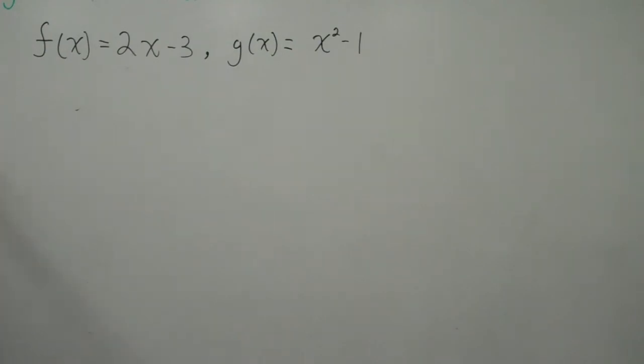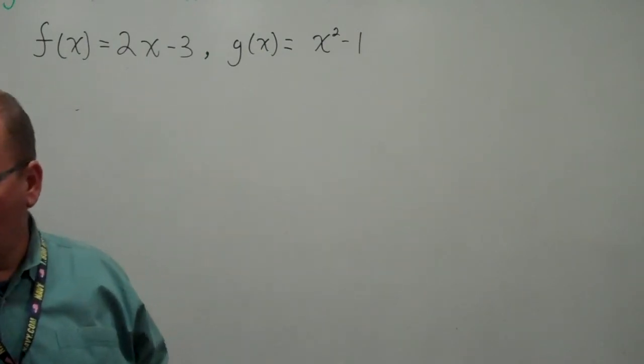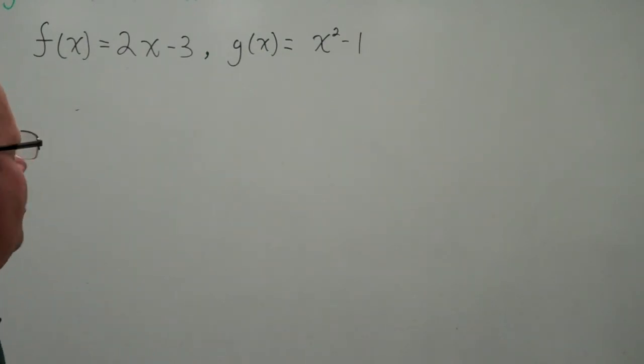If we have a function f(x) = 2x - 3, and another function g(x) = x² - 1, these can be any functions. This is just two random functions. This happens to be the first example in your book.